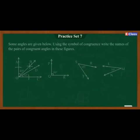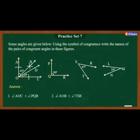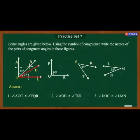Practice Set 7, Question 1: Some angles are given below. Using the symbol of congruence, write the names of pairs of congruent angles. Answers: Angle AOC is congruent to angle PQR, which is 90 degrees. Angle AOB is congruent to angle TSR, which is 45 degrees. Angle DOC is congruent to angle LMN, which is 30 degrees.